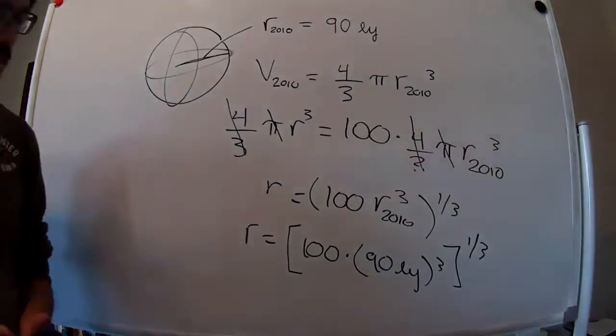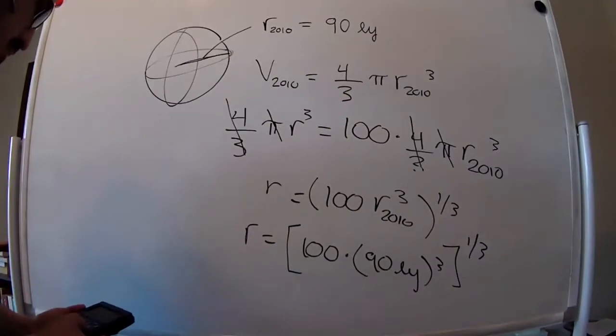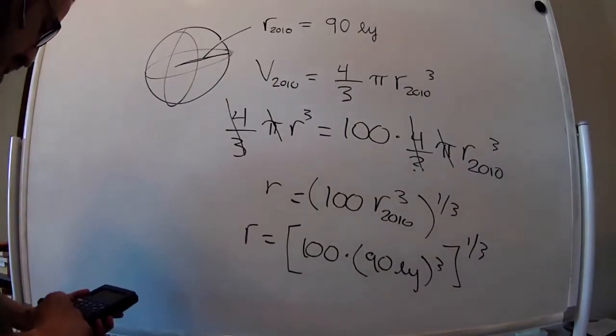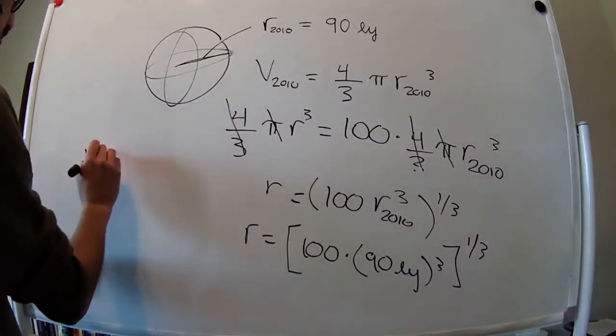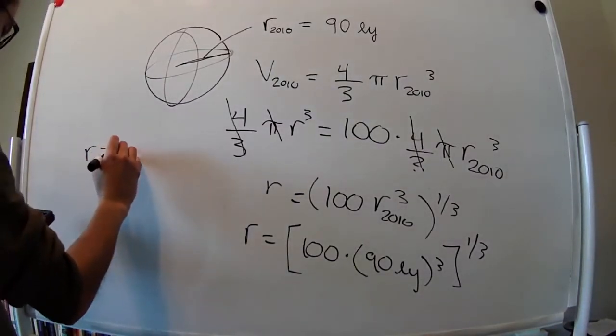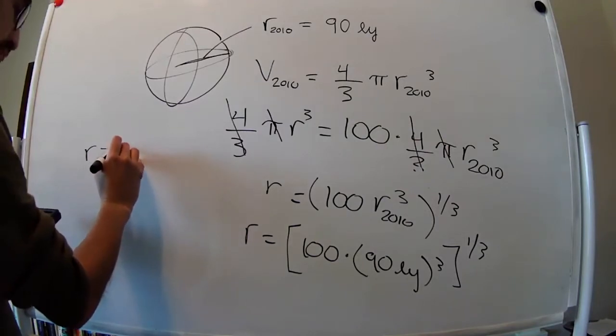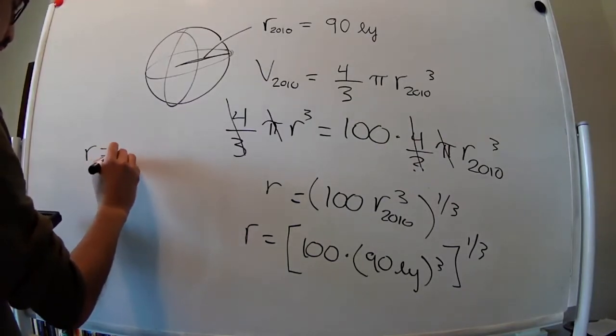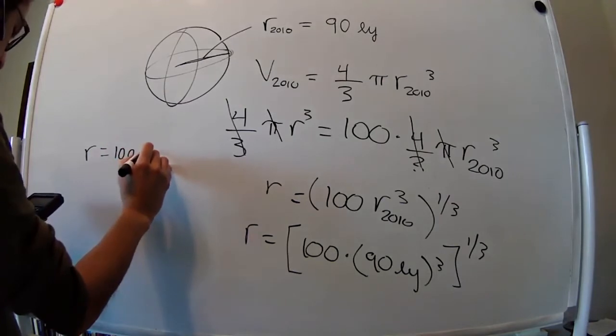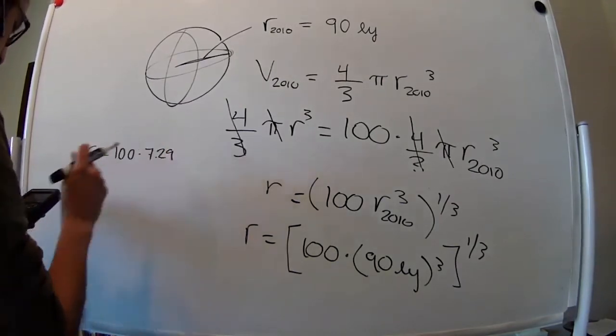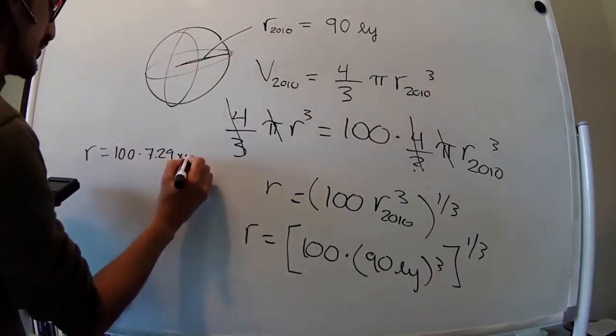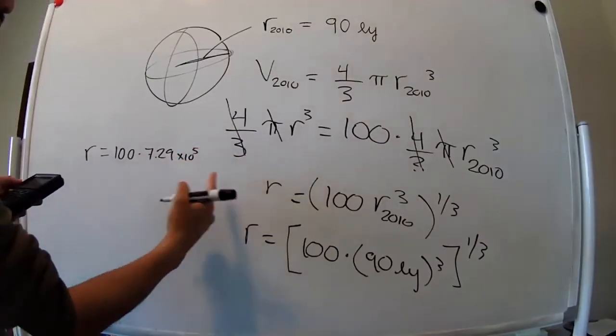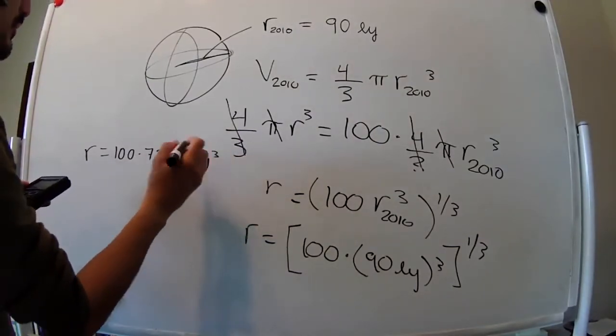So I'm going to write up my calculator. 90 cubed is, I'm going to put it over here. What is this? 7.29 times 100.